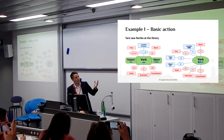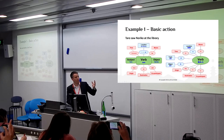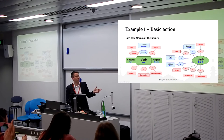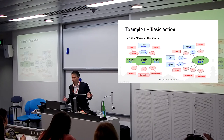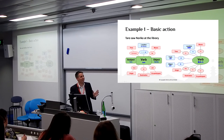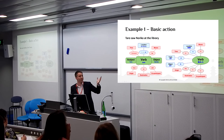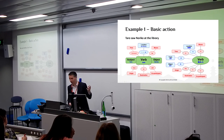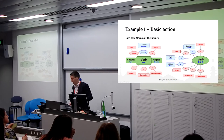The word order doesn't matter. Because 'wo' comes after Noriko, we know that Noriko is the person that was seen. And similarly, Taro-wa — because we mark Taro with 'wa' — that's how we know who it was that actually did the seeing.